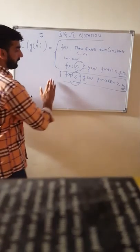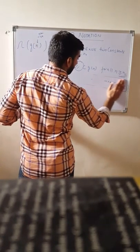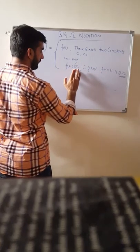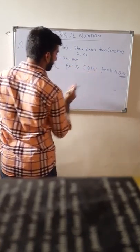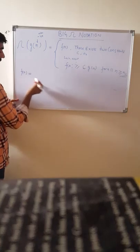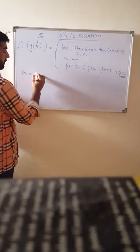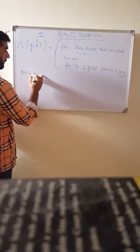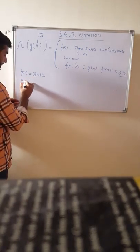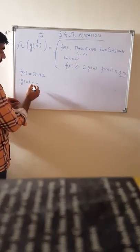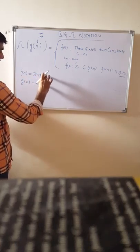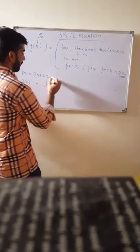Let us move on to the example. I will quickly show you an example that fits this definition. Let us assume there is a function F(n) which denotes some time complexity. I am taking a hypothetical value: F(n) = 3n + 2, and for this, G(n) = n.